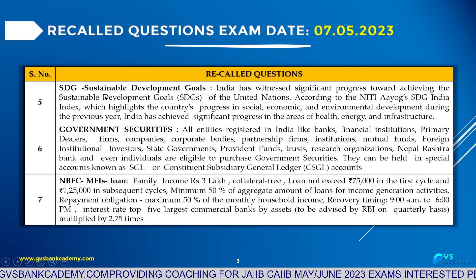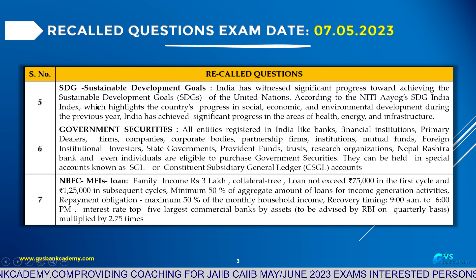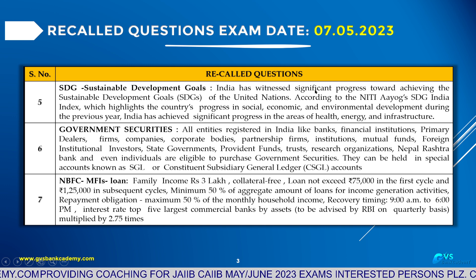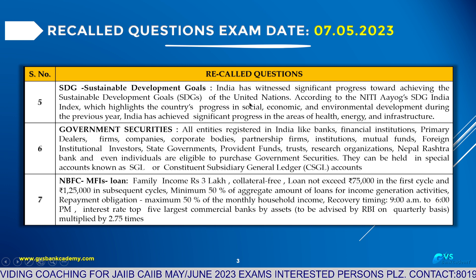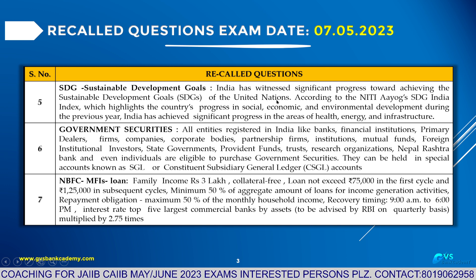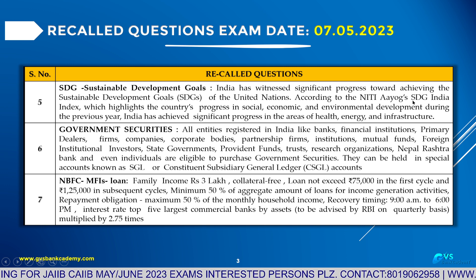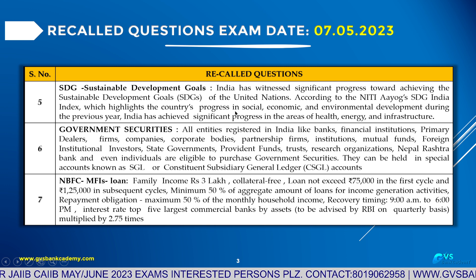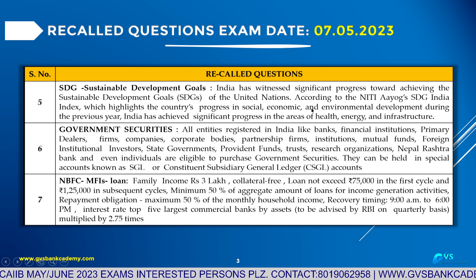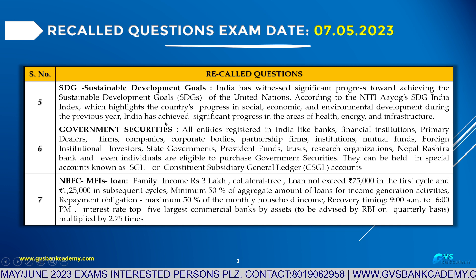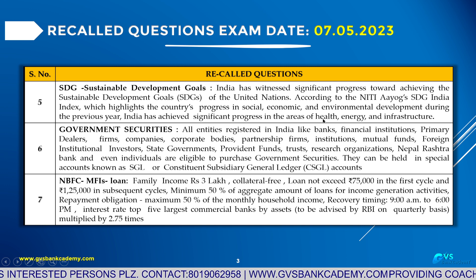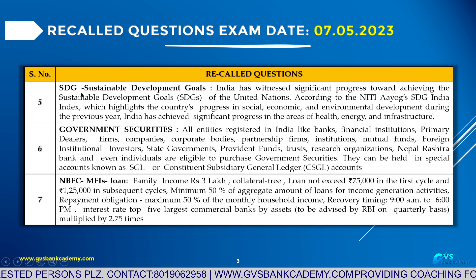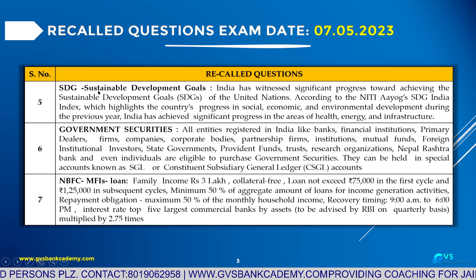Number five: Sustainable Development Goals. This is taken from the United Nations. India has witnessed significant progress towards achieving the Sustainable Development Goals of the United Nations. According to the Niti Aayog's SDG India index, which highlights the country's progress towards social, economic, and environmental development, India has achieved significant progress in the areas of health, energy, and infrastructure. This is a very useful and upcoming topic.